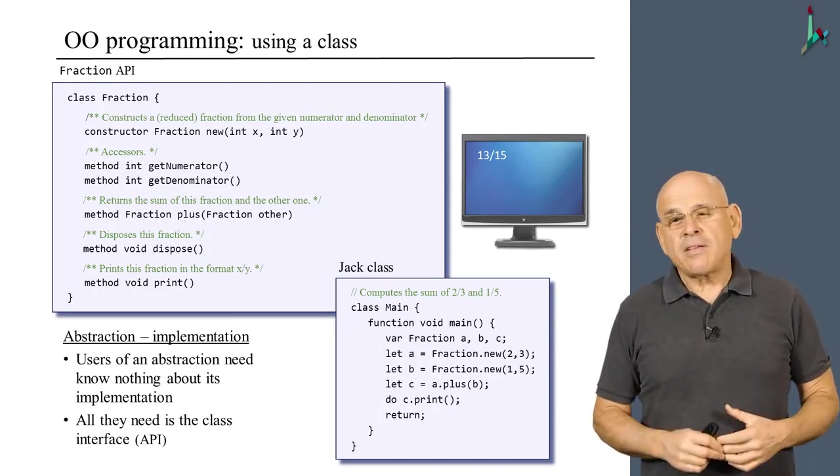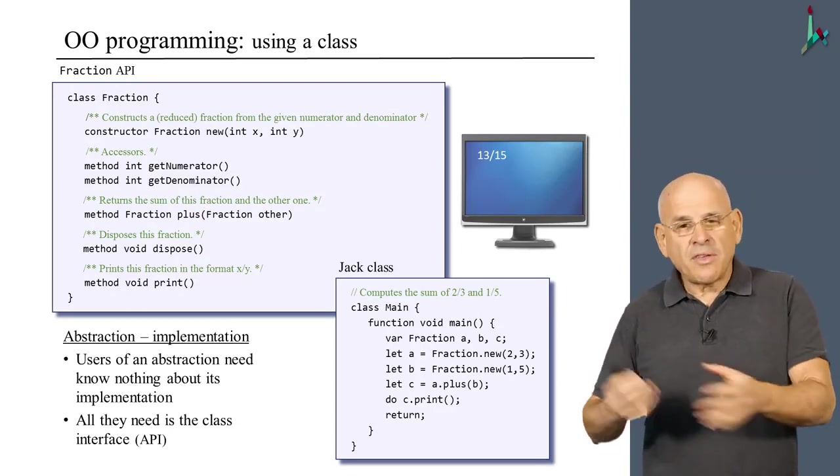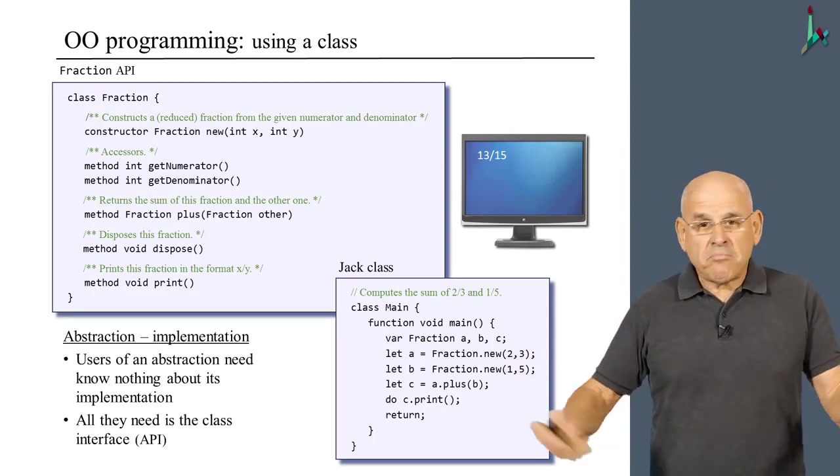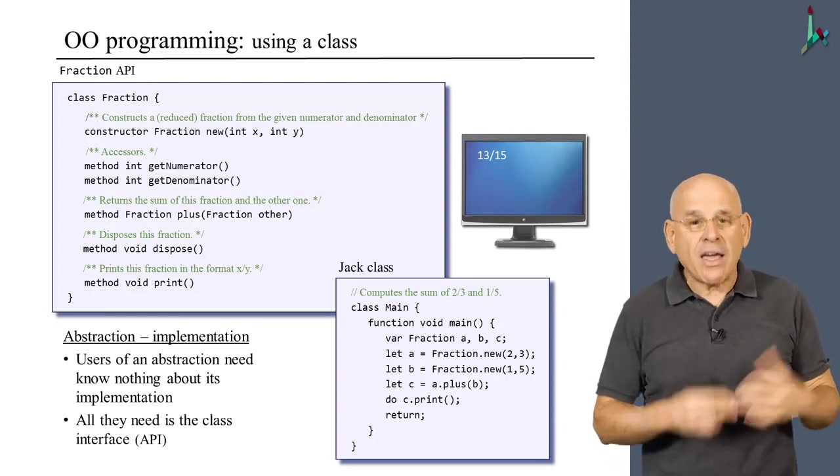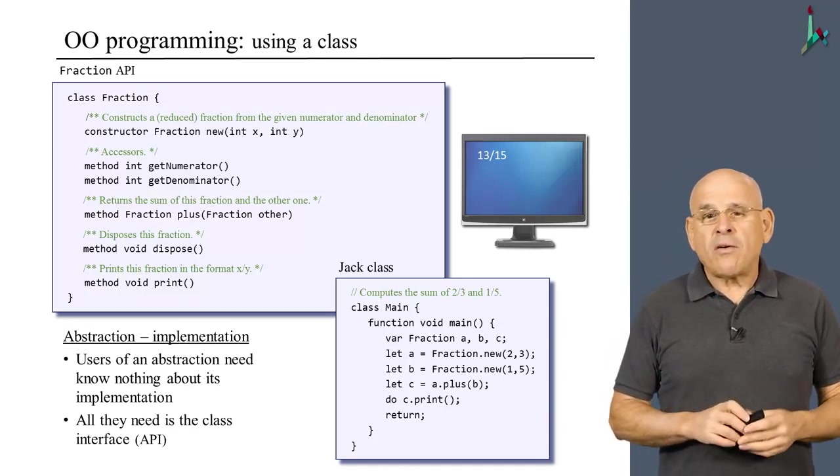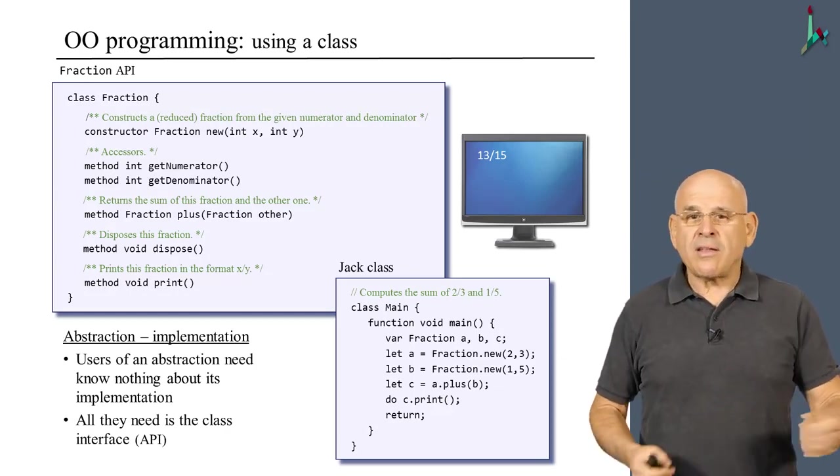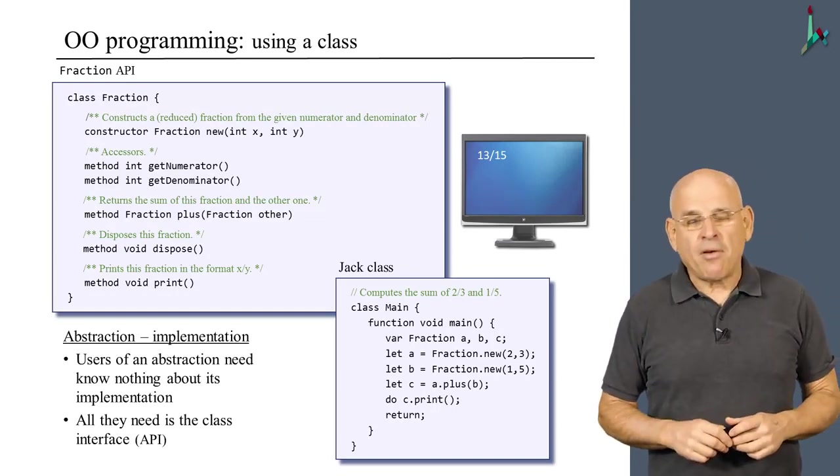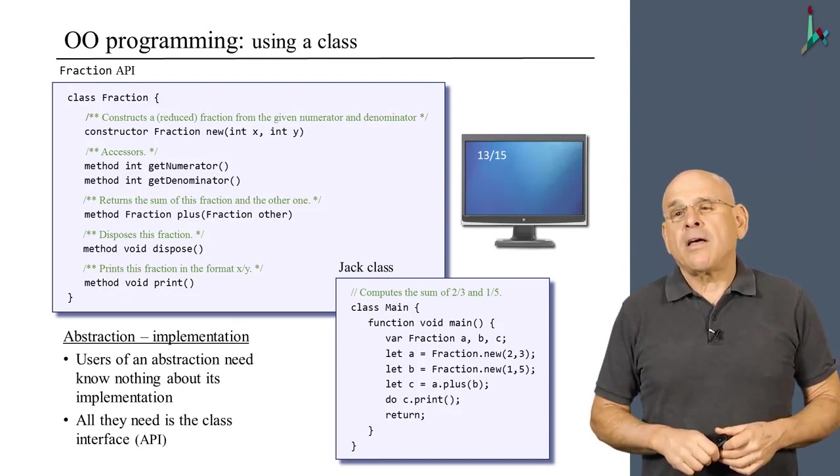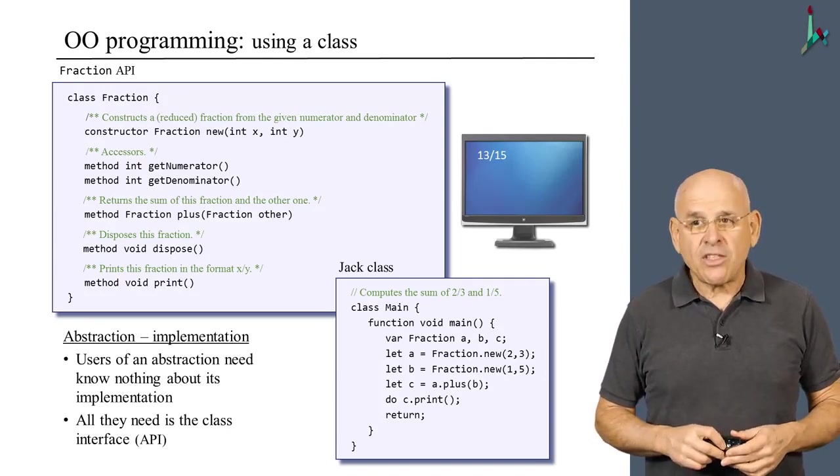That's how we use abstractions in high-level programming. And yet, at some point, someone has to implement this abstraction. This someone may be you at a different stage of the project. It may be another programmer who works in the same team together with you. Or it may be someone in another company that was hired in order to develop this abstraction. So, let us now take off the hat of the application programmer that writes the client code and put on the cap of the abstraction implementer, the person who has to actually build the fraction abstraction and realize it in Jack.